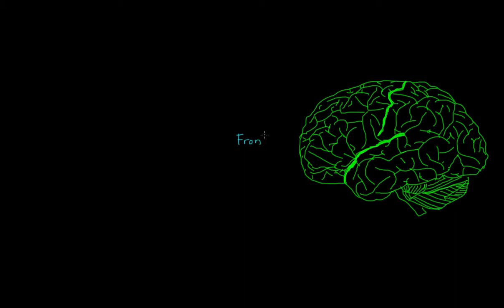What I've drawn for you here is the human brain. This is what you would see if you were looking at someone standing in profile, or sideways in front of you. So this would be the front of their head — their eyes, nose, and mouth would be located down here. This would be the back of their head, this would be the top, and down here would be the bottom. We refer to this big area, the first thing you would see looking at the outer portion of the brain — we call this the cerebral cortex.